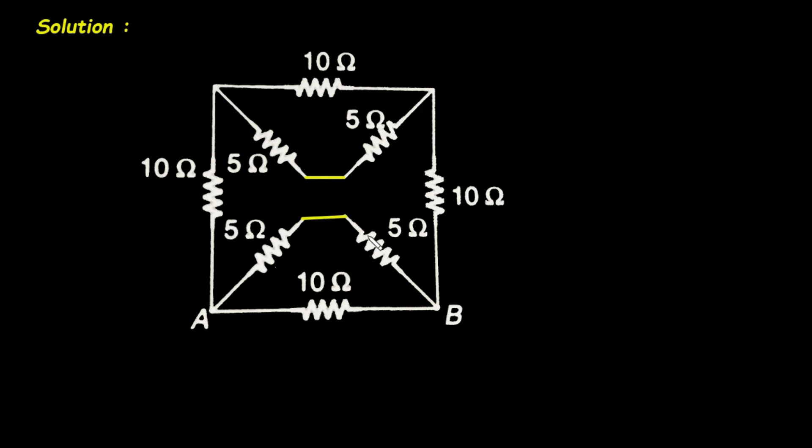Now we can easily simplify this network and get the answer. So here we can clearly see this 5 ohm and this 5 ohm they are connected in series. So it will be simply 10 ohm. This will be 10 ohm.